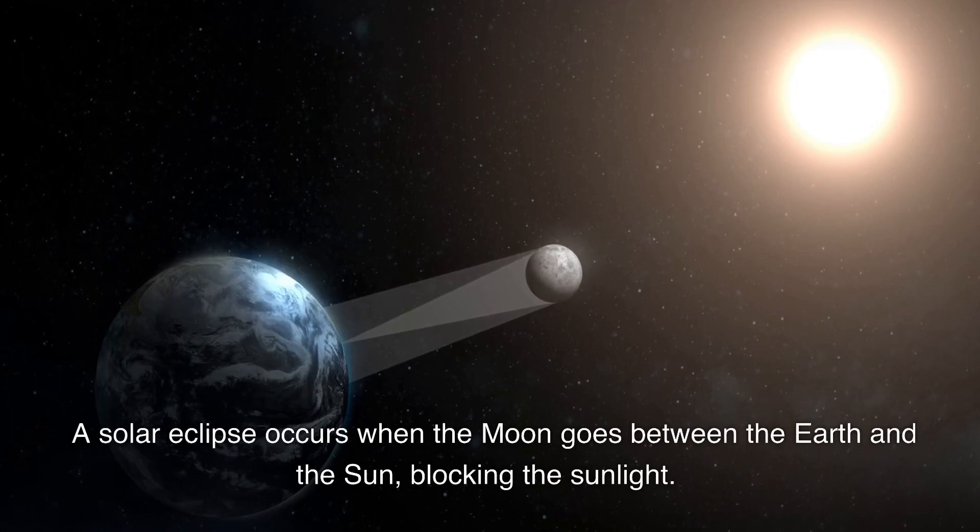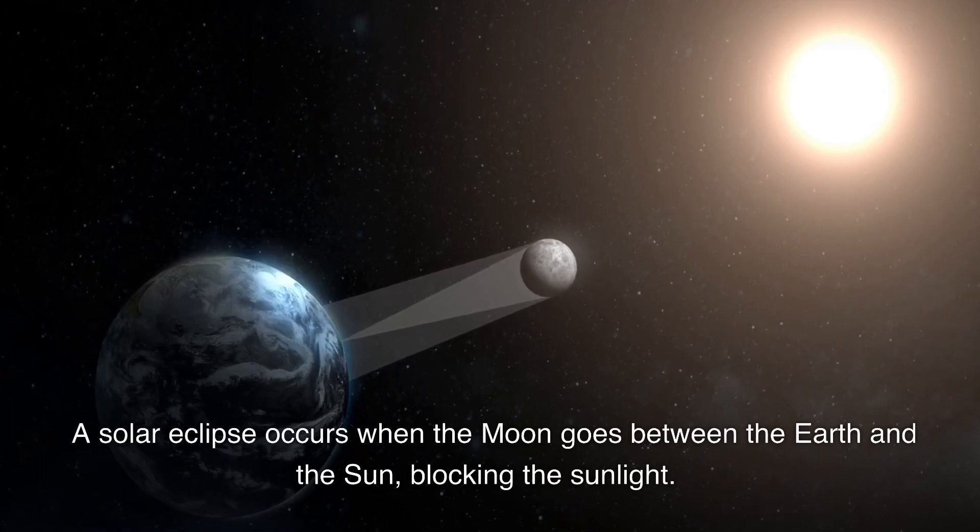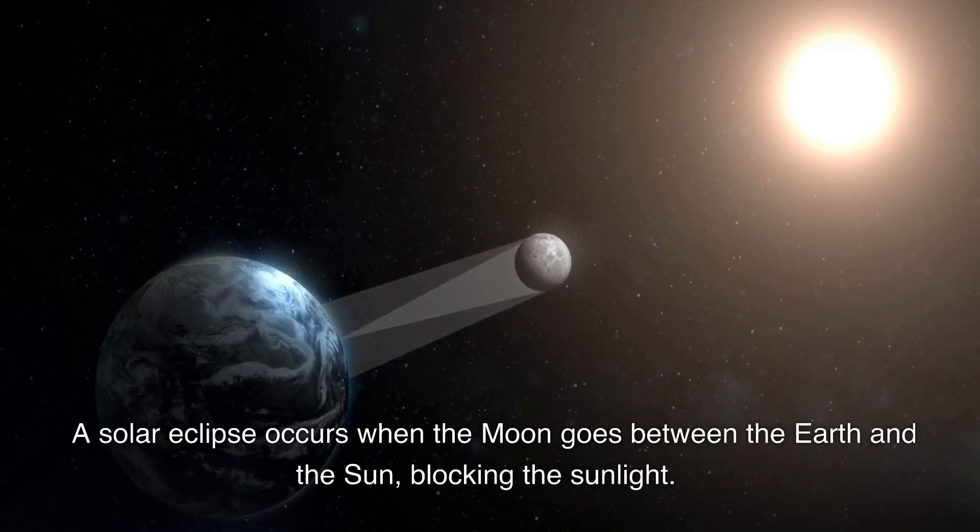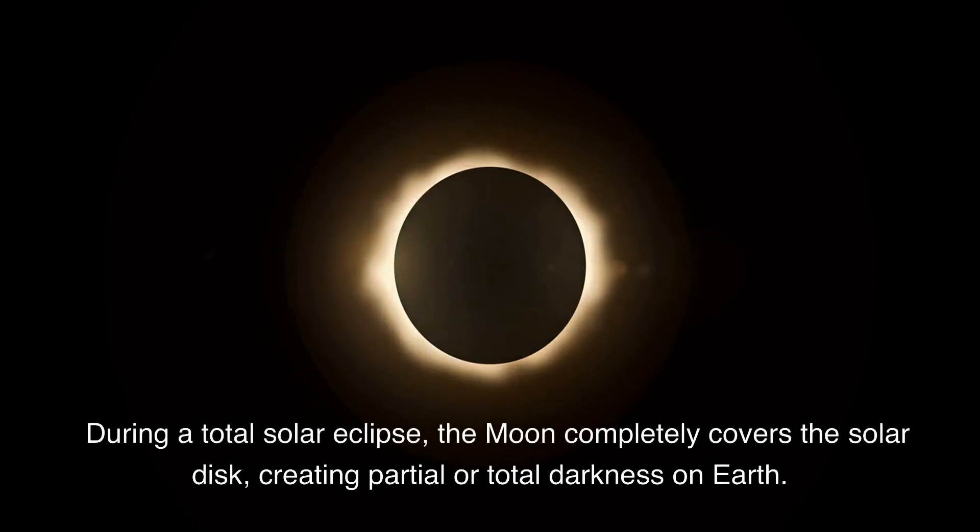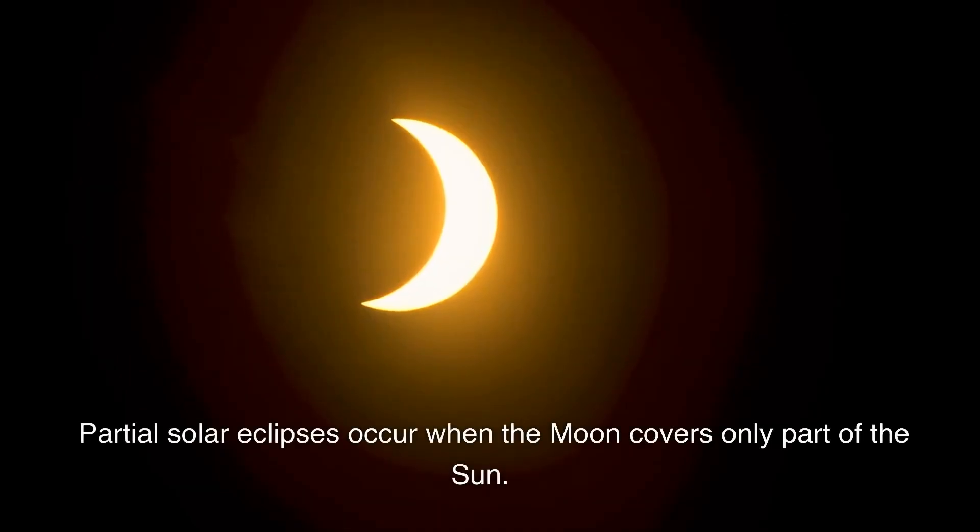A solar eclipse occurs when the moon goes between the earth and the sun, blocking the sunlight. During a total solar eclipse, the moon completely covers the solar disk, creating partial or total darkness on earth. Partial solar eclipses occur when the moon covers only part of the sun.